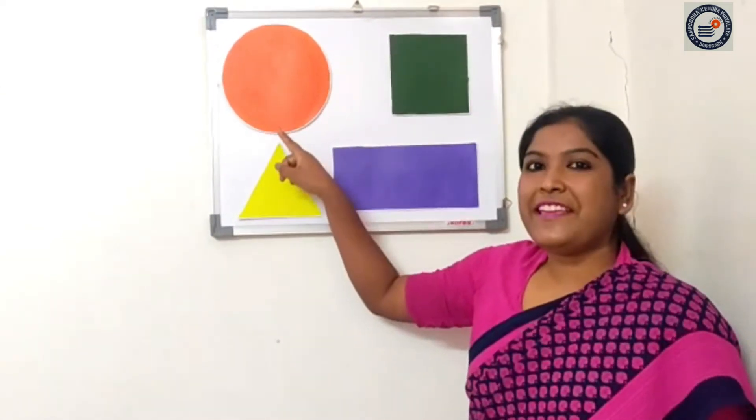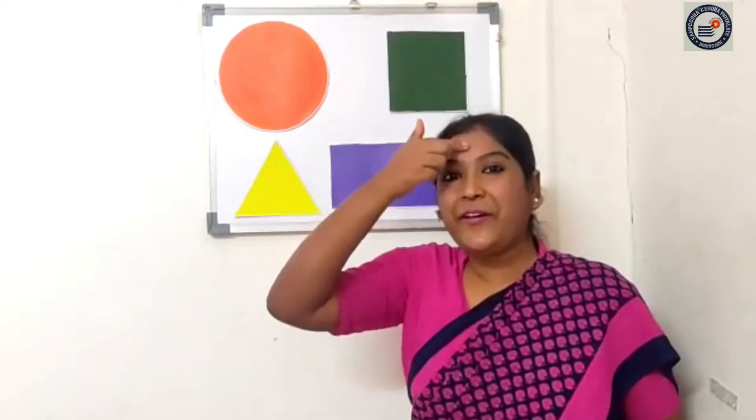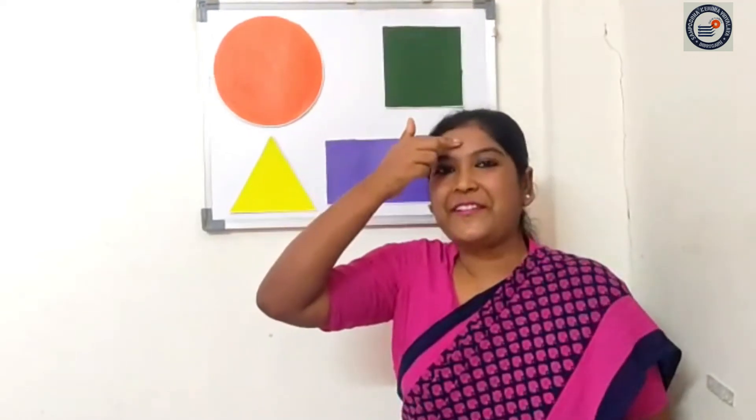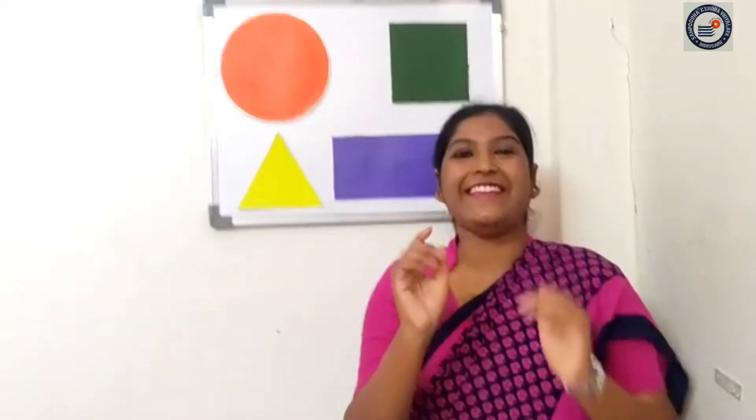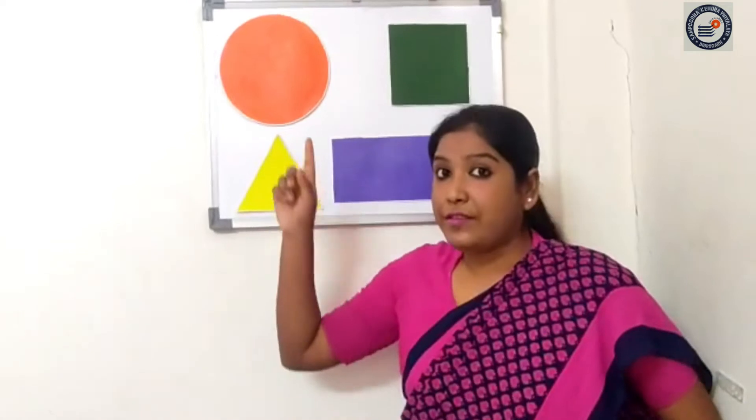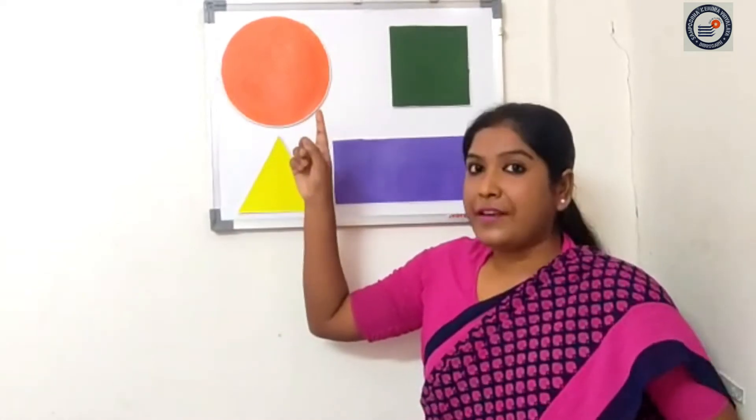This is a circle. Mammy ki bindi, gol gol. Mammy ki roti, gol gol. Yes, this is a circle.